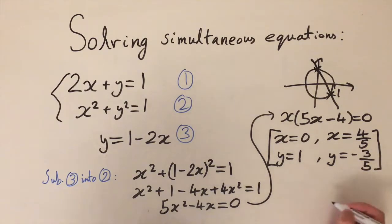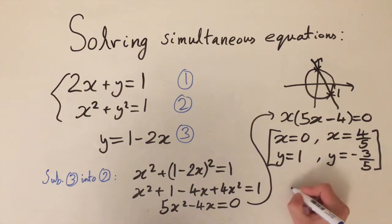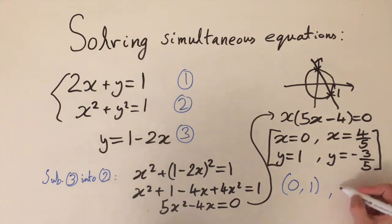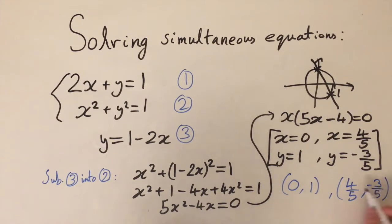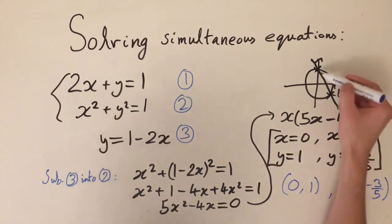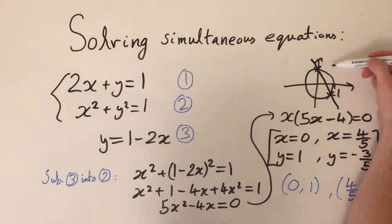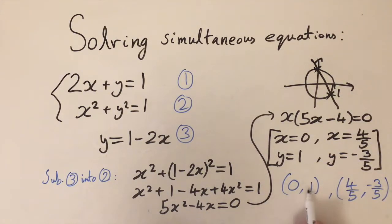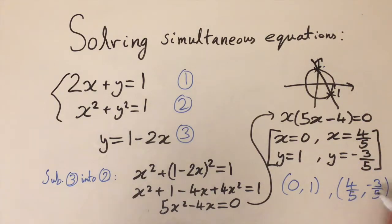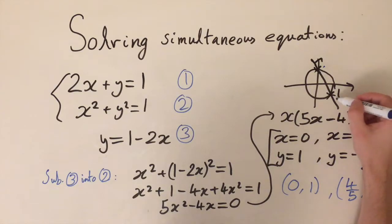A convenient way to write the solutions is using coordinate notation. The first solution is x equals 0 and y equals 1. The second solution is x equals 4 over 5 and y equals minus 3 over 5. It's important that these values of x and y go together, because they correspond to the coordinates where the graphs intersect — (0, 1) is the first intersection point and (4/5, -3/5) is the second.